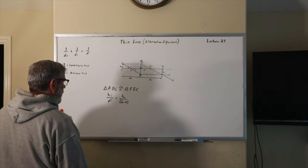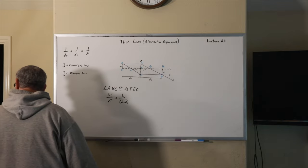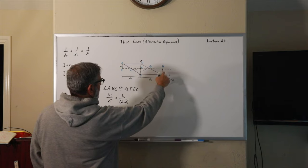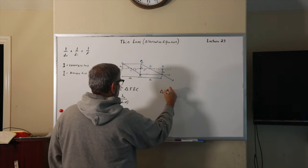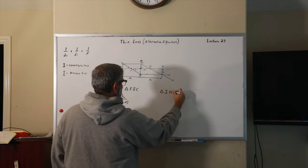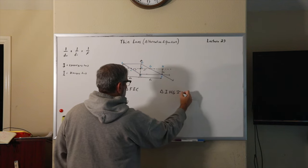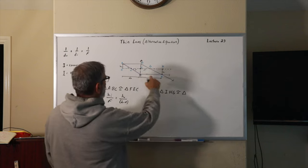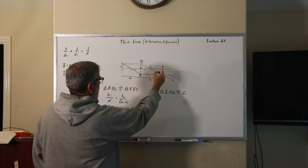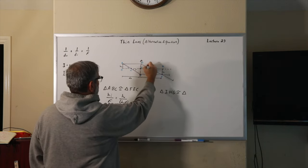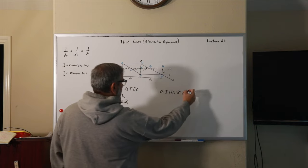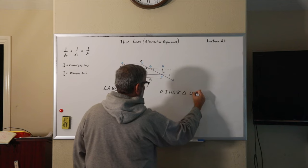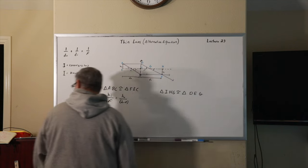But that's not the only similar triangle I want to point out. We also have triangle IHG. And triangle DEG. Again, these angles are the same because they are opposite angles.